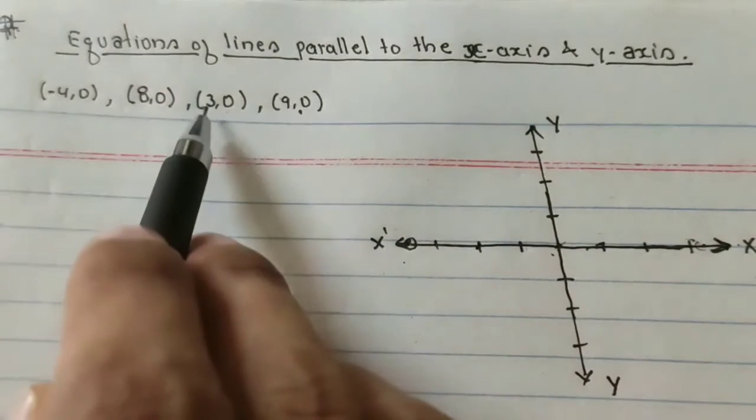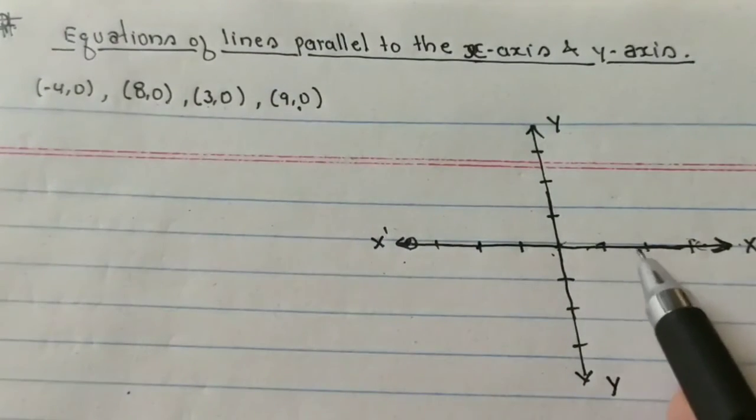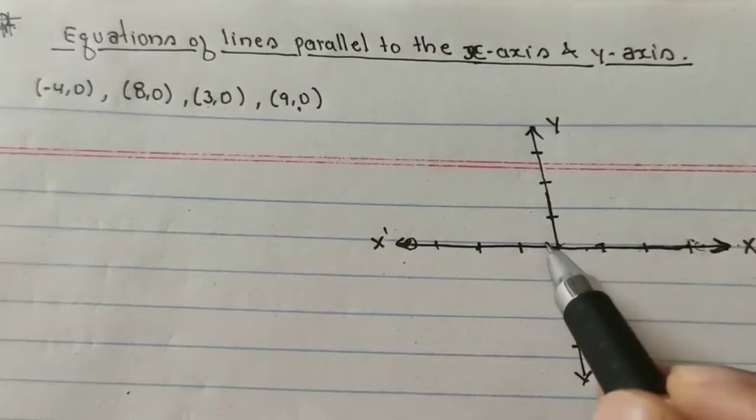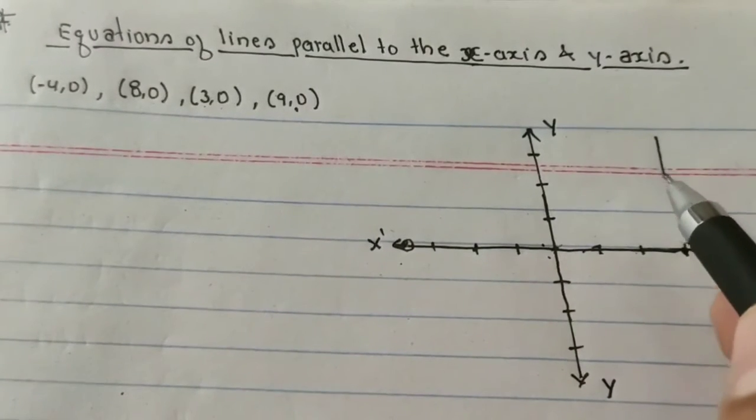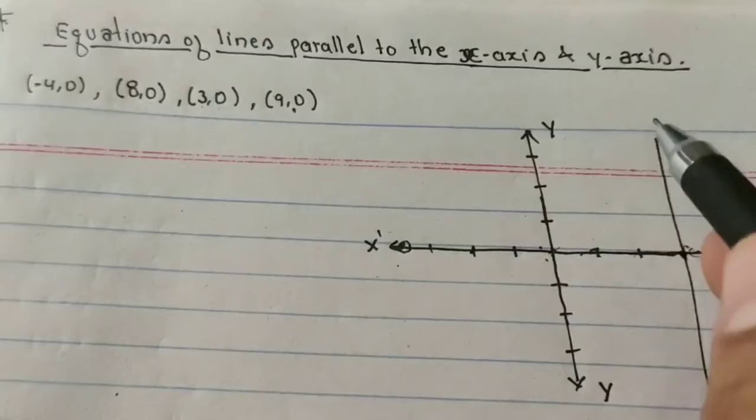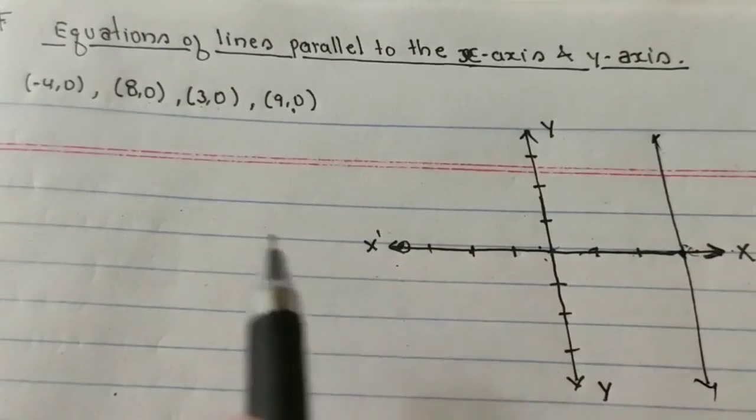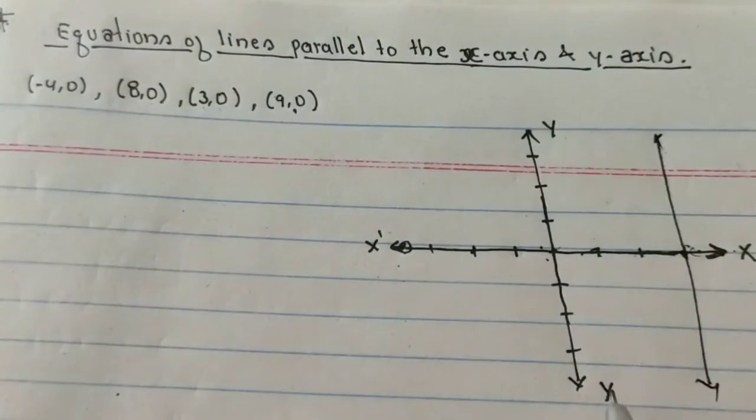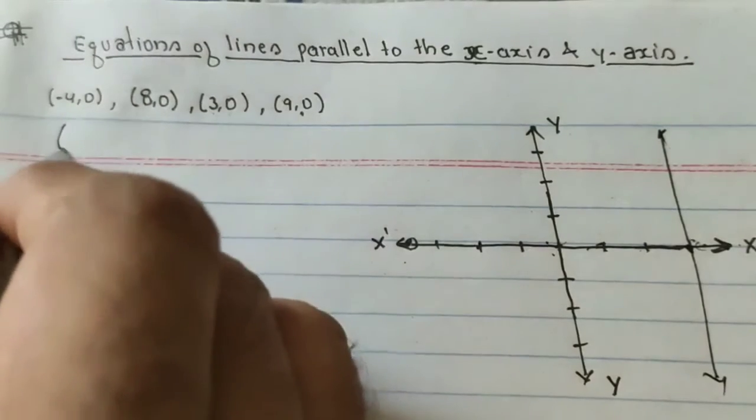Suppose here the line is (3, 0). It means here 1, 2, 3, and 0 here. The point is here, so I can draw like this. The line is parallel to your y-axis.